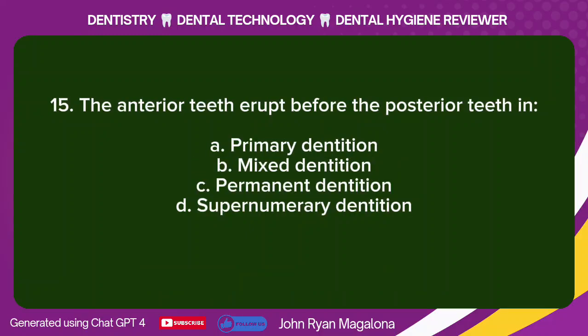Question 15: The anterior teeth erupt before the posterior teeth in: A. Primary dentition. B. Mixed dentition. C. Permanent dentition. D. Supernumerary dentition. Answer: A. Primary dentition.